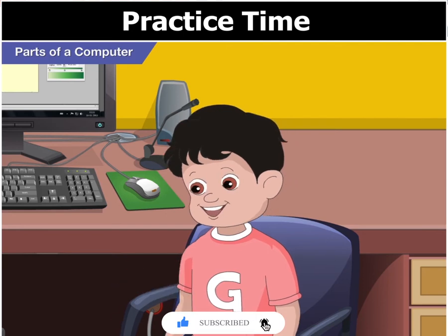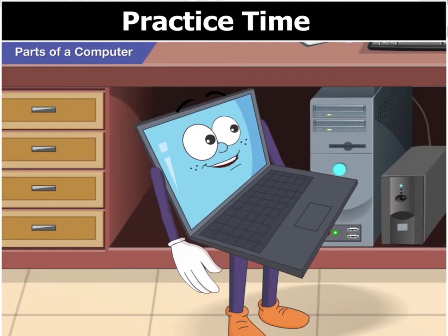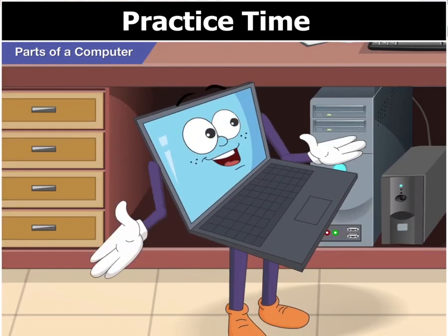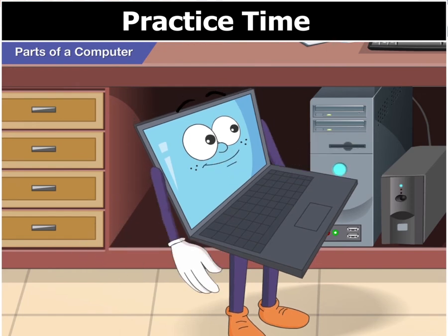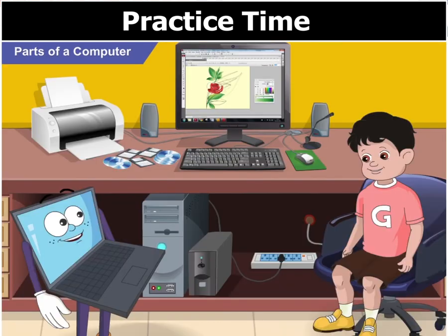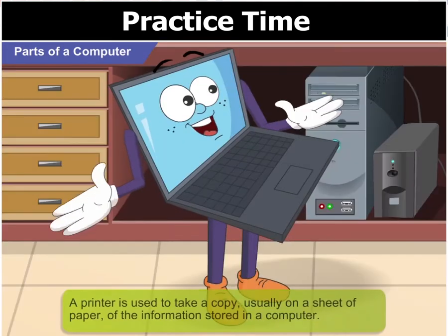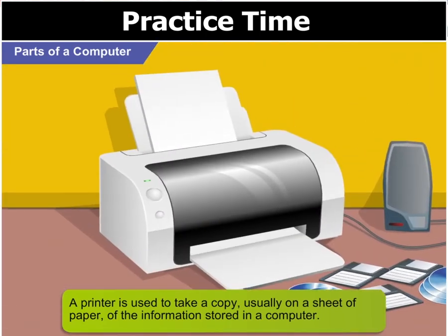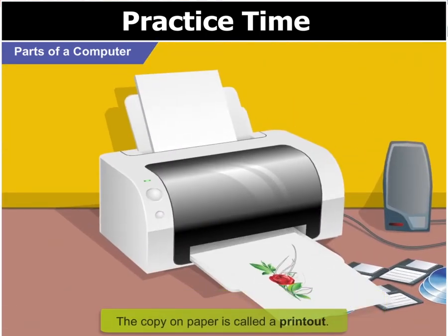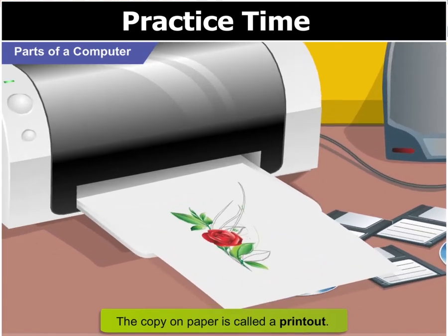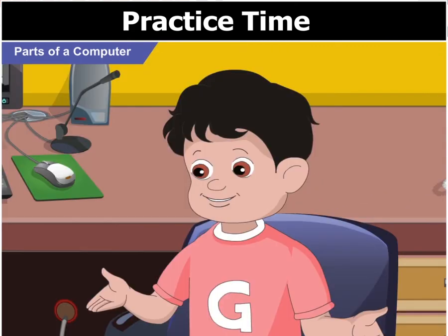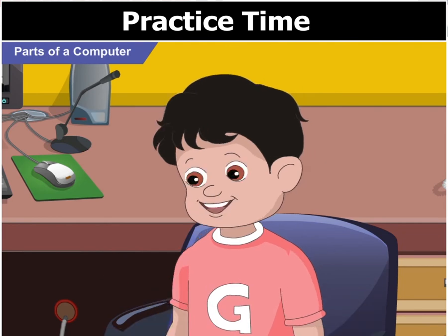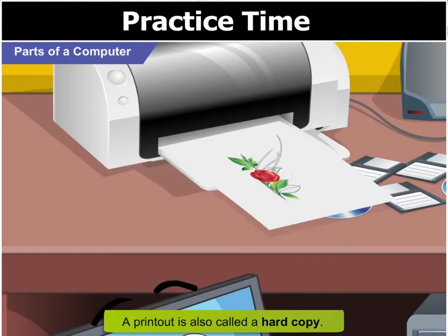What are these other devices attached to this computer? These devices help a computer to do different things. This is a printer. A printer is used to take a copy, usually on a sheet of paper, of the information stored in your computer. This copy on paper is called a printout. A printout is also called a hard copy.